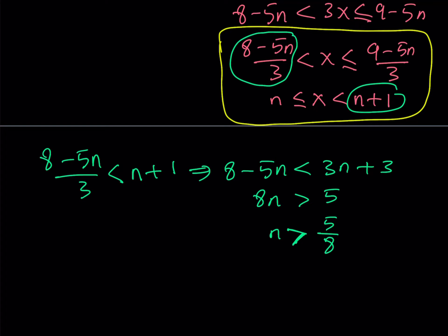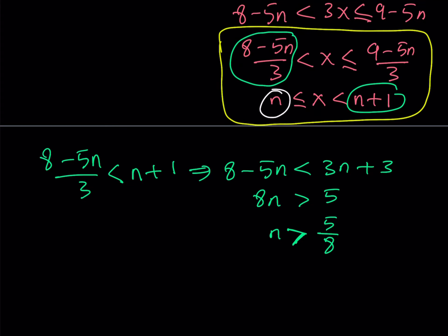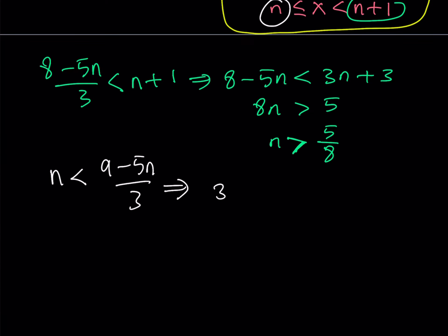Let's solve the second one. In the second inequality, what I need to do is compare these two quantities. Obviously, this means that n is less than 9 minus 5n over 3. And this implies 3n is less than 9 minus 5n. If you put both numbers on the same side, you should be getting n is less than 9 over 8.